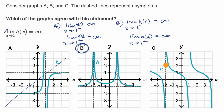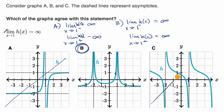Let's check graph C. You can see very clearly that at x equals one, as we approach it from the left we go to negative infinity, and as we approach from the right we go to positive infinity. So this would not be approaching the same infinity, and you would rule graph C out as well.